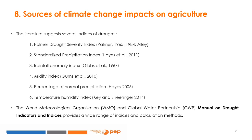In regards to heat stress, the literature offers a varied range of drought indices. These include the severity of the Palmer drought (Palmer 1965, Ali 1984), the standardized precipitation event (Hayes et al.), the rainfall anomaly (Gibbs et al. 1967), the aridity index (Gomes et al. 2010), the normal precipitation measure (Hayes 2006), and the temperature humidity event (Key and Snehringer 2014). The Manual on Drought Indicators and Indices of the World Meteorological Organization (WMO) and the Global Water Partnership (GWP) provides a wide range of indices and their methods of calculation.